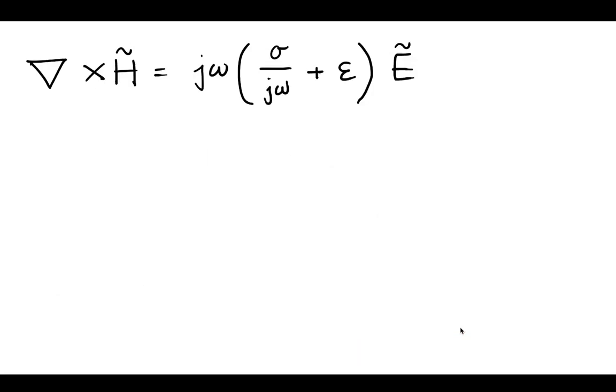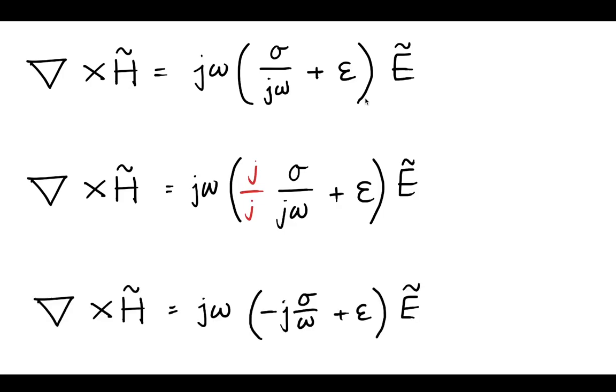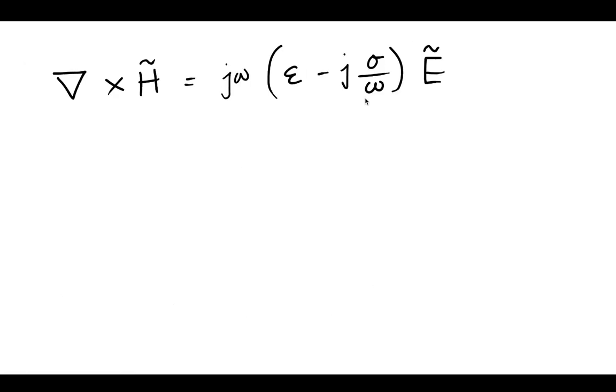Now, once we've pulled that j omega out, we have these two terms inside of the parentheses. We want to get that j out of the denominator. We'll multiply by j over j. This is a common method. That gives us a minus j sigma over omega.